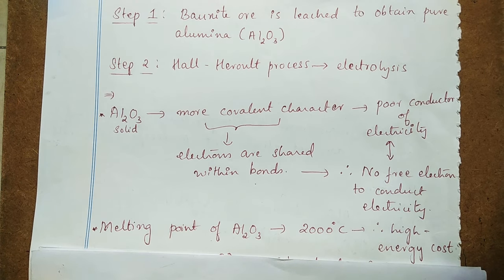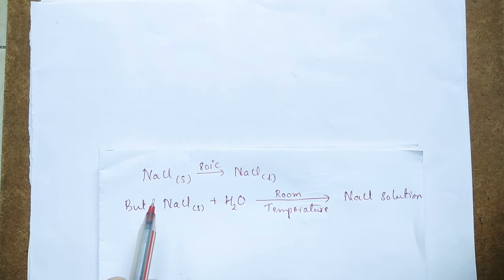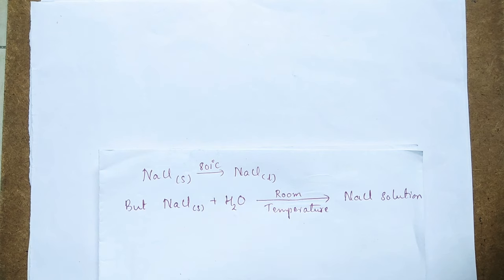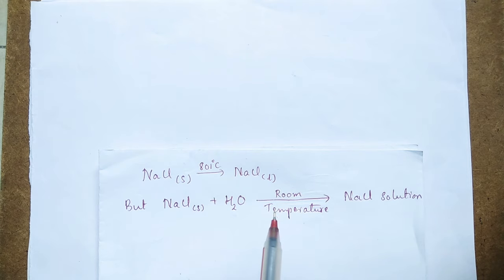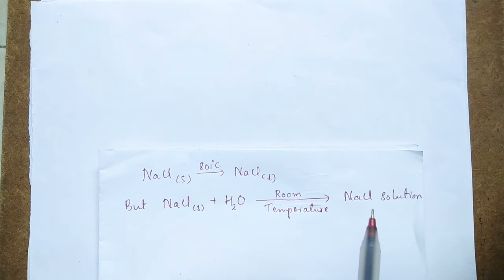Let me take another example. We have sodium chloride solid — our normal table salt. If you want to melt solid sodium chloride into liquid, nearly 800°C temperature is required. But to obtain NaCl solution, room temperature is sufficient — NaCl solid dissolves in water at room temperature itself. So which method is better? Of course, the second method is better, because room temperature is sufficient to get NaCl solution.